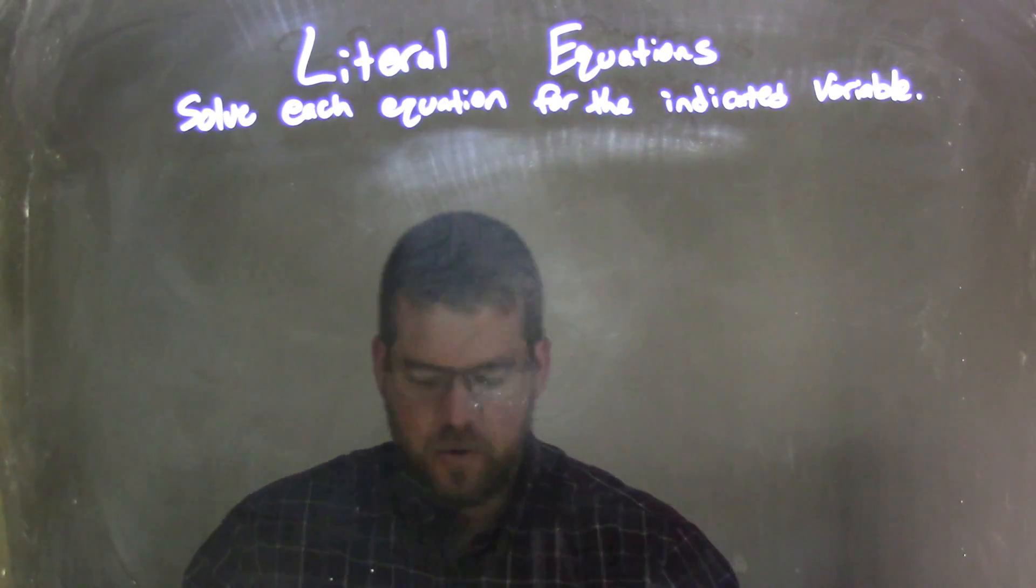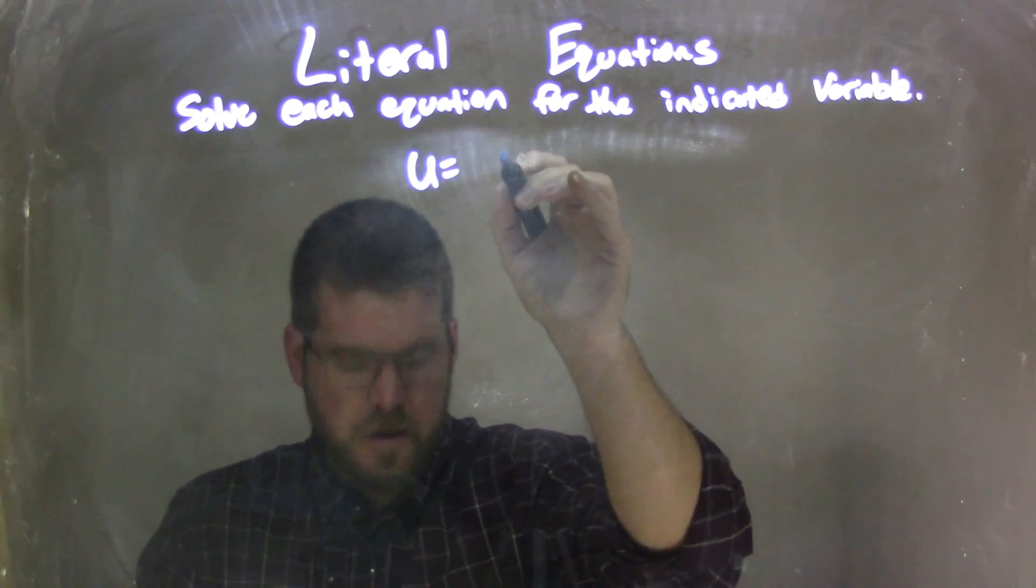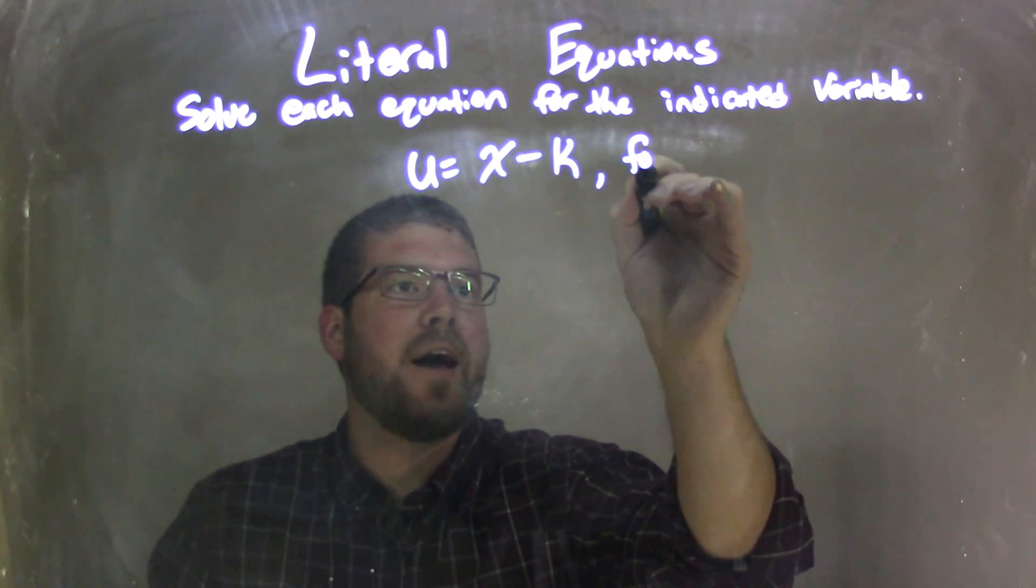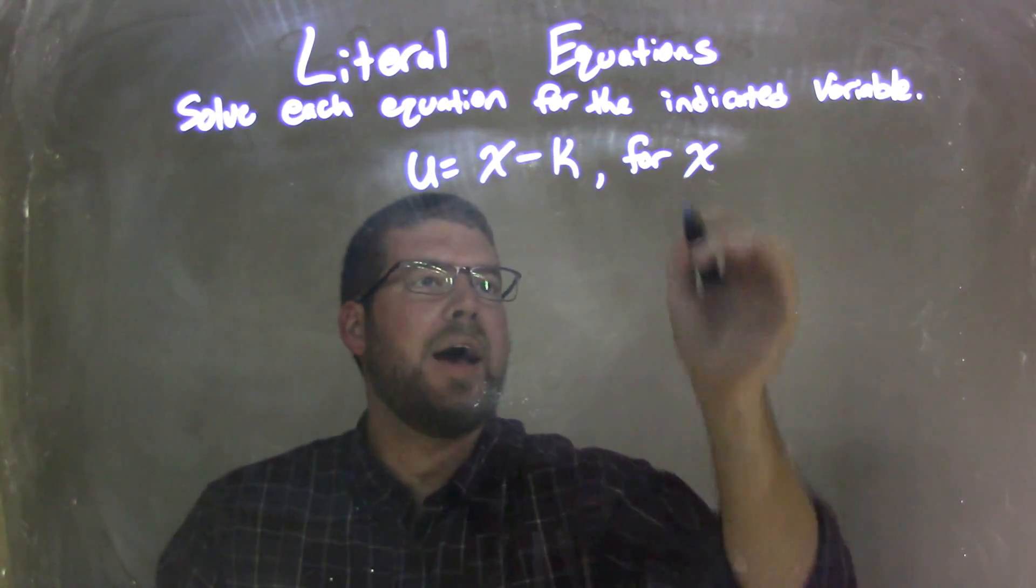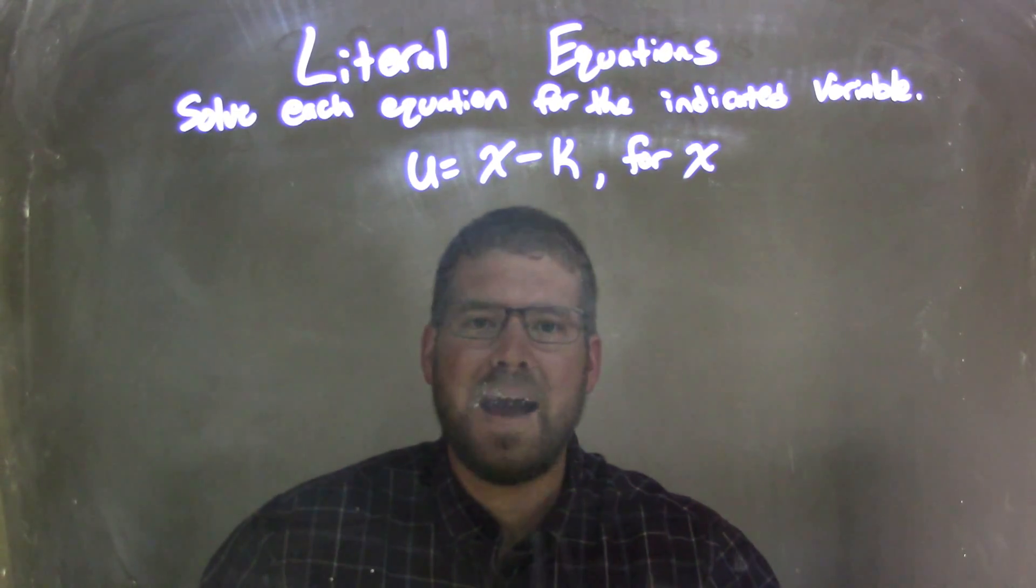So if I was given this equation, u equals x minus k, and I need to solve that for x.